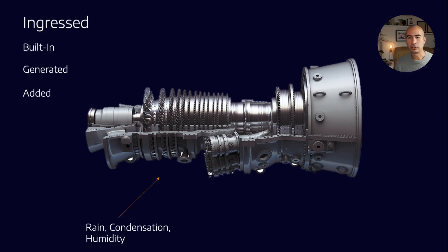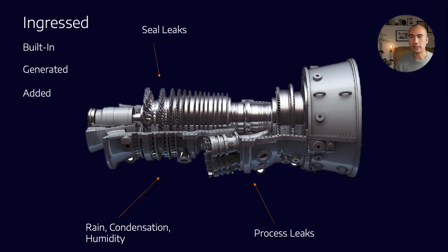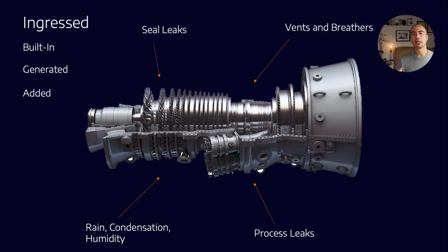Then we've got ingressed contamination — things like rain, condensation, humidity, maybe wash-down water, processed gas leaks, seal leaks, and condensation getting through vents and breathers. This is what we would call ingressed or environmental contamination.